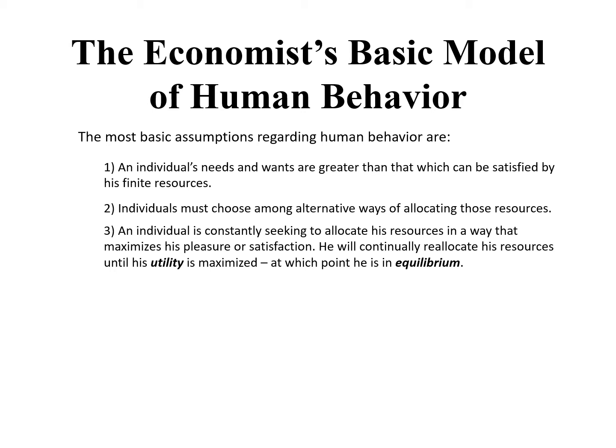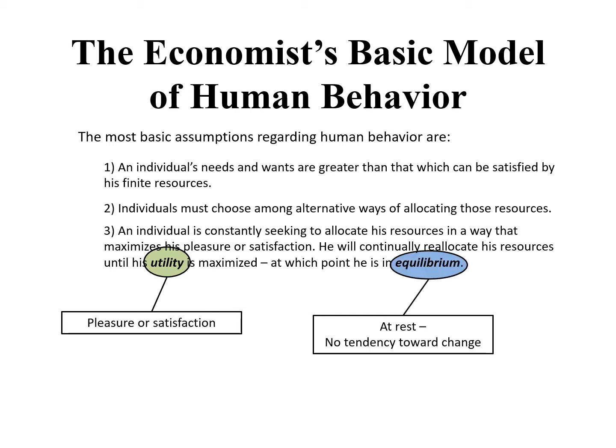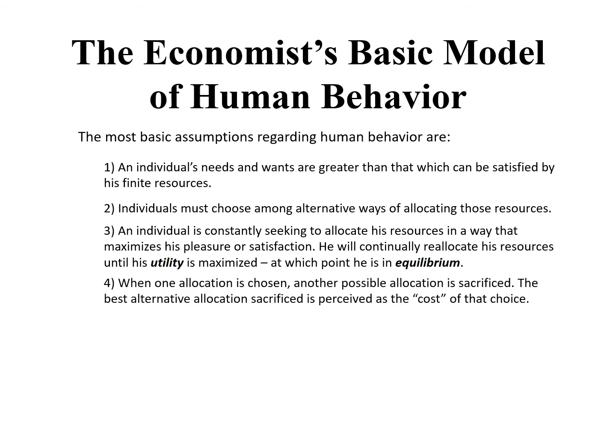At which point he is in equilibrium. Utility is the economist's word for pleasure or satisfaction. Equilibrium just means at rest, or no tendency towards change. When one allocation is chosen, another possible allocation is sacrificed — that's because the resources are limited. The individual perceives the best alternative allocation, that is, the best one that is sacrificed, as the cost of that choice.